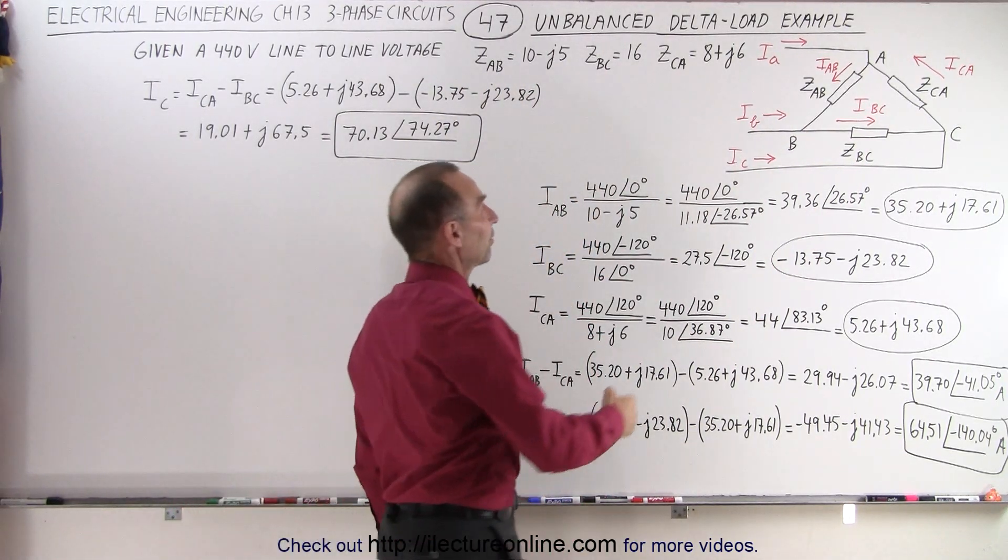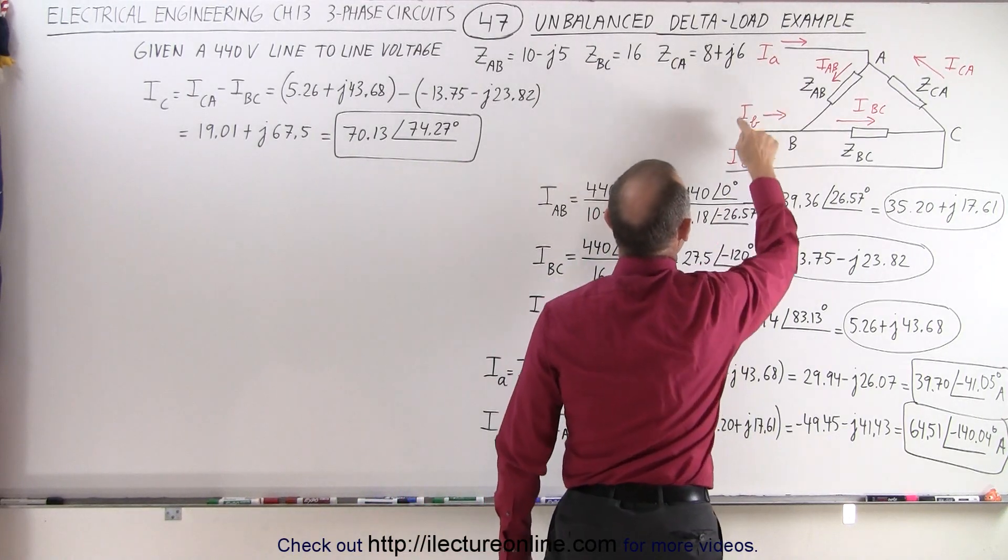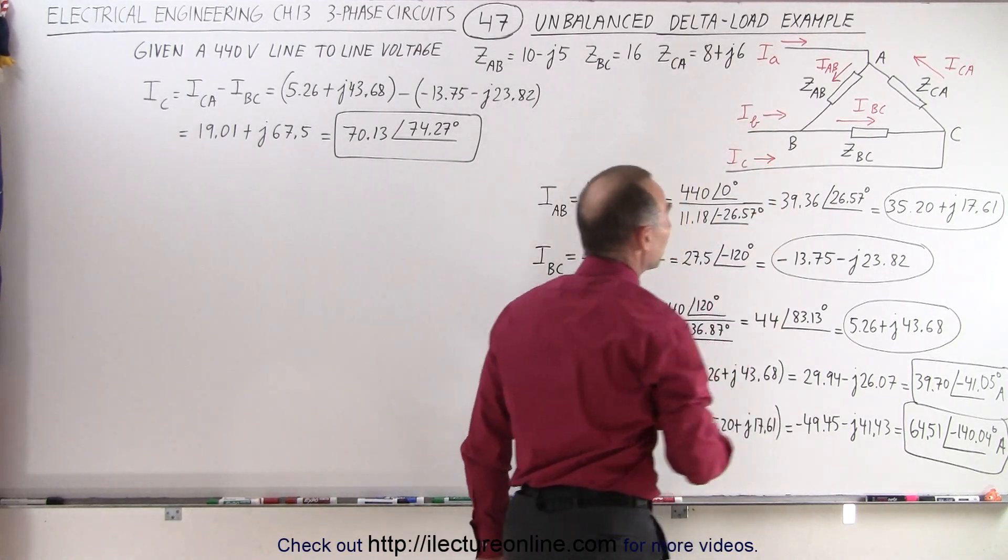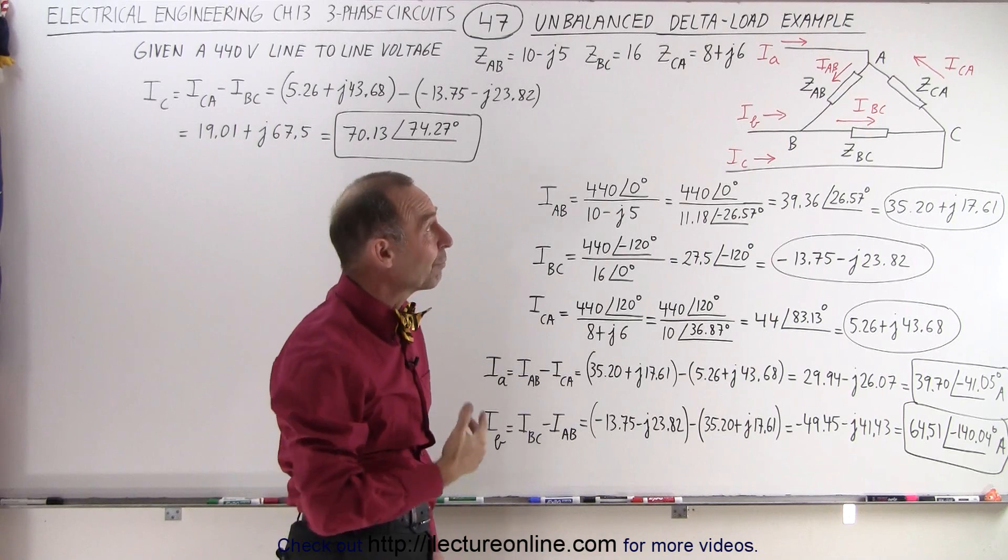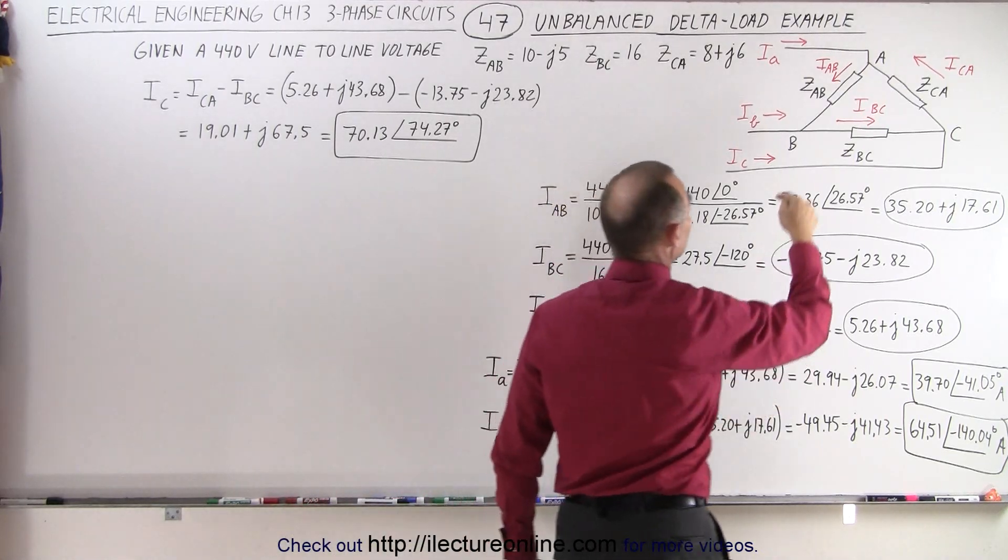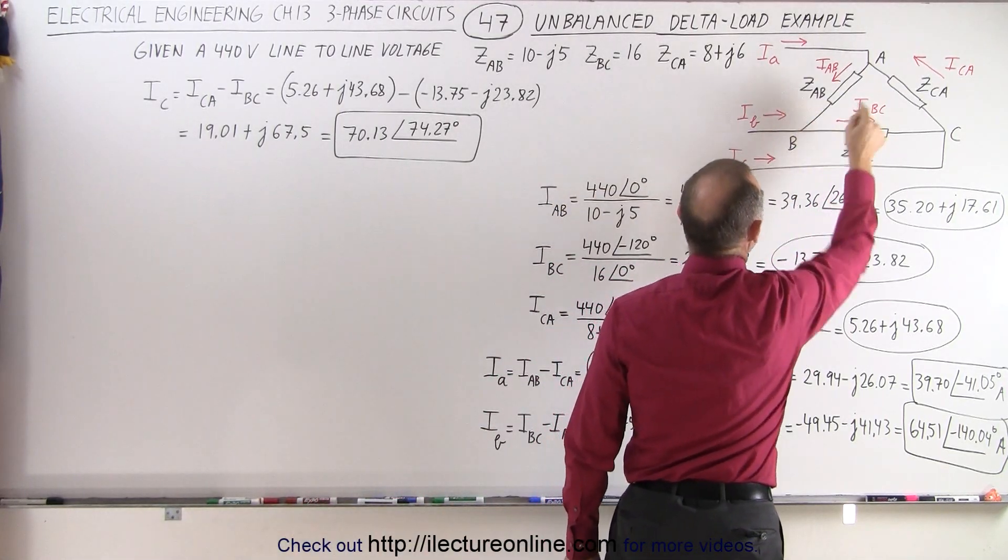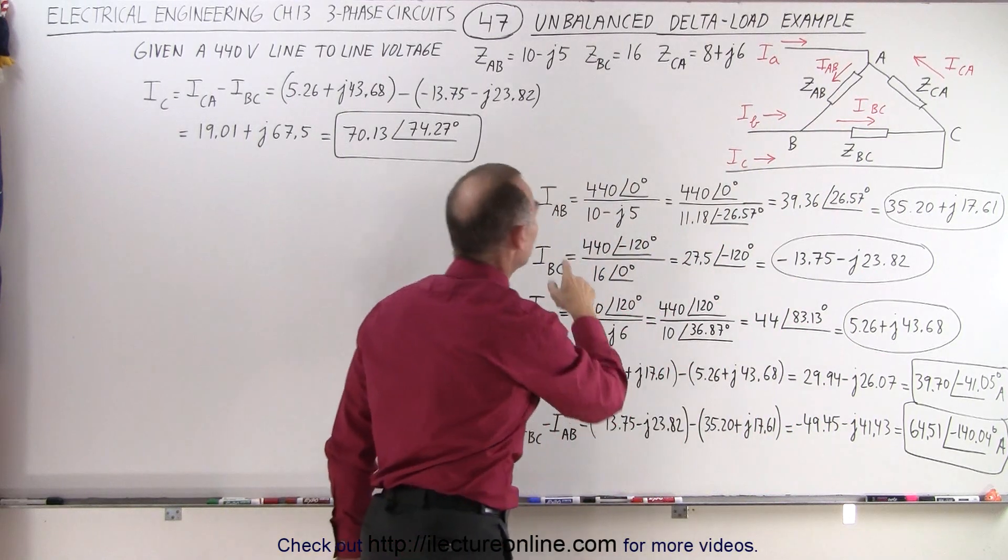So what we're trying to do is find the three line currents, Ia, Ib, and Ic. But since it's a delta load, what we first need to calculate is the current across each of the three impedances, which can be done as follows.